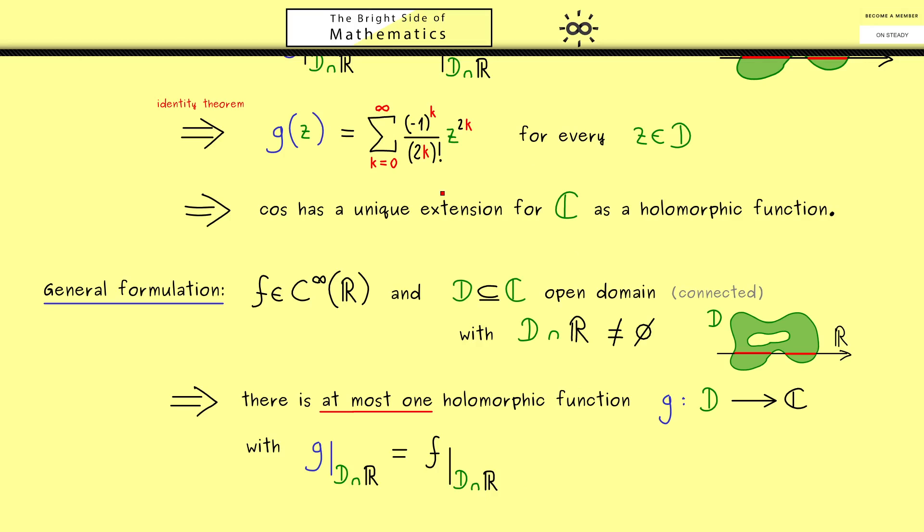So for example, as before, if we have a power series in R for f, we have the same power series for g in C. Simply because the power series is always a holomorphic extension and now we know it's the only possible one.